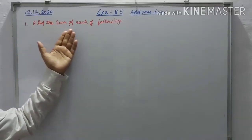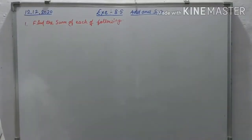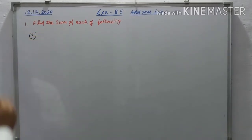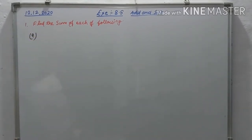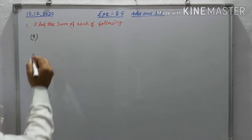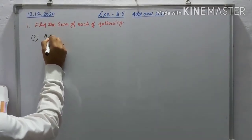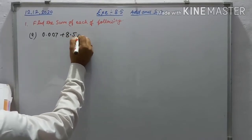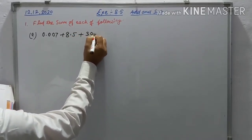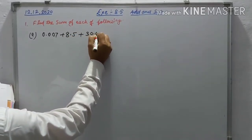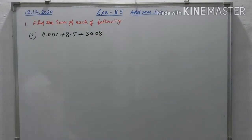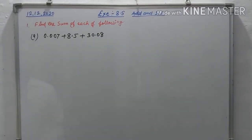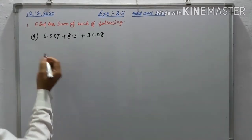The question is to find the sum of each of the following. The first question is 0.007 plus 8.5 plus 30.08. It is a very important point in the sum of decimal numbers.